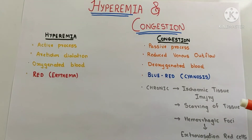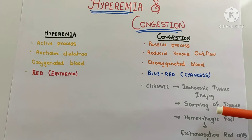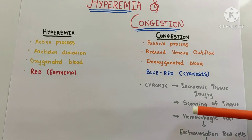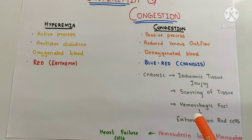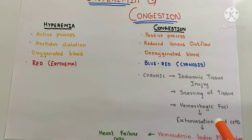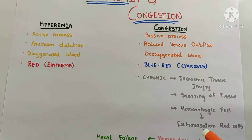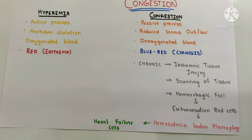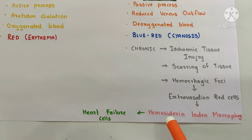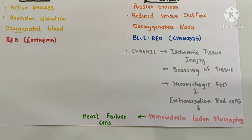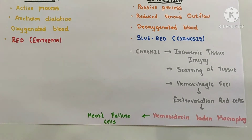If congestion persists further, the capillaries may rupture, and hence there can be hemorrhagic foci. Our RBCs will get extravasated, and there can be further catabolism of these red blood cells, leading to accumulation of hemosiderin-laden macrophages.